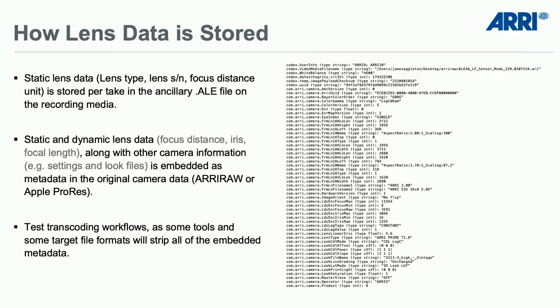Lens data is stored as a static file along with the recorded ProRes and ARRI RAW material. It's essentially a long text file containing all the camera settings — time of day, CDL values, LUTs used in the camera. The static metadata covers camera settings, lens type, lens serial number, and focus distance unit. This is recorded as a separate ALE file alongside the ProRes and ARRI RAW files.